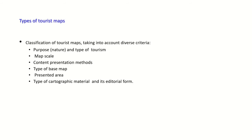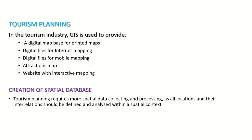In the tourism industry, GIS is used to provide digital map bases for printed maps, digital files for internet mapping, digital files for mobile mapping, attractions map websites with interactive mapping. The creation of a spatial database is also important; tourism planning requires collecting and processing spatial data as all locations and their interrelations must be defined and analyzed within a spatial context.